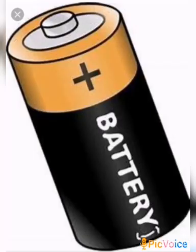Looking at this picture, this is a battery or an electric cell. This electric cell consists of two terminals — one is the positive terminal and the other is the negative terminal. The metal cap is the positive terminal and the metal disc is the negative terminal. All electric cells have two terminals, and this electric cell produces electricity from the chemicals stored in it.